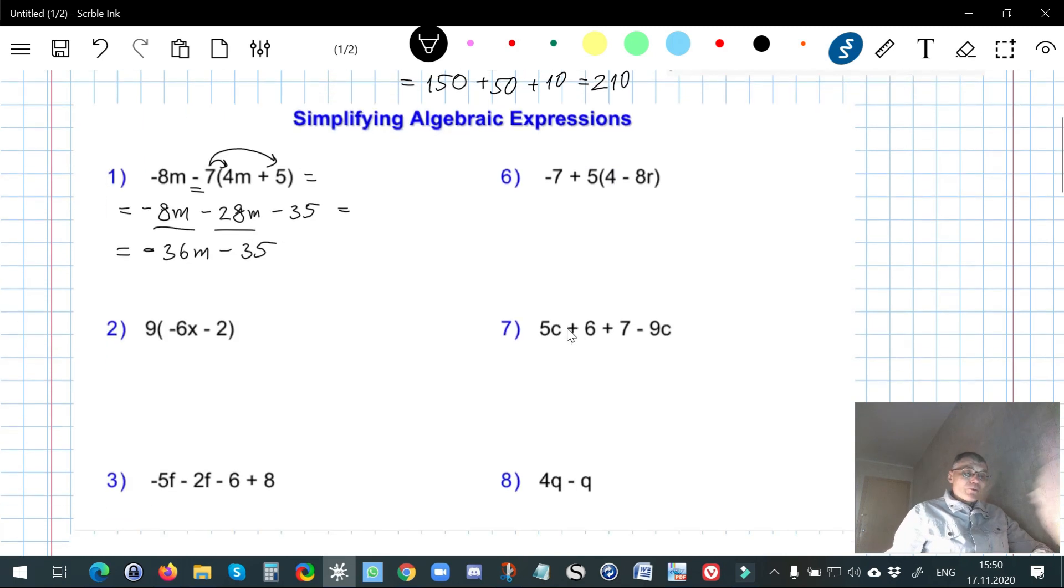Number 2, it's a little bit easier, we just have to distribute. Of course, you don't always draw those arrows, it's just for your convenience right now, for the time being, but later I'll drop it. So 9 by negative 6 is negative 54, we don't forget about x. And 9 multiplied by negative 2 is negative 18, that is it.